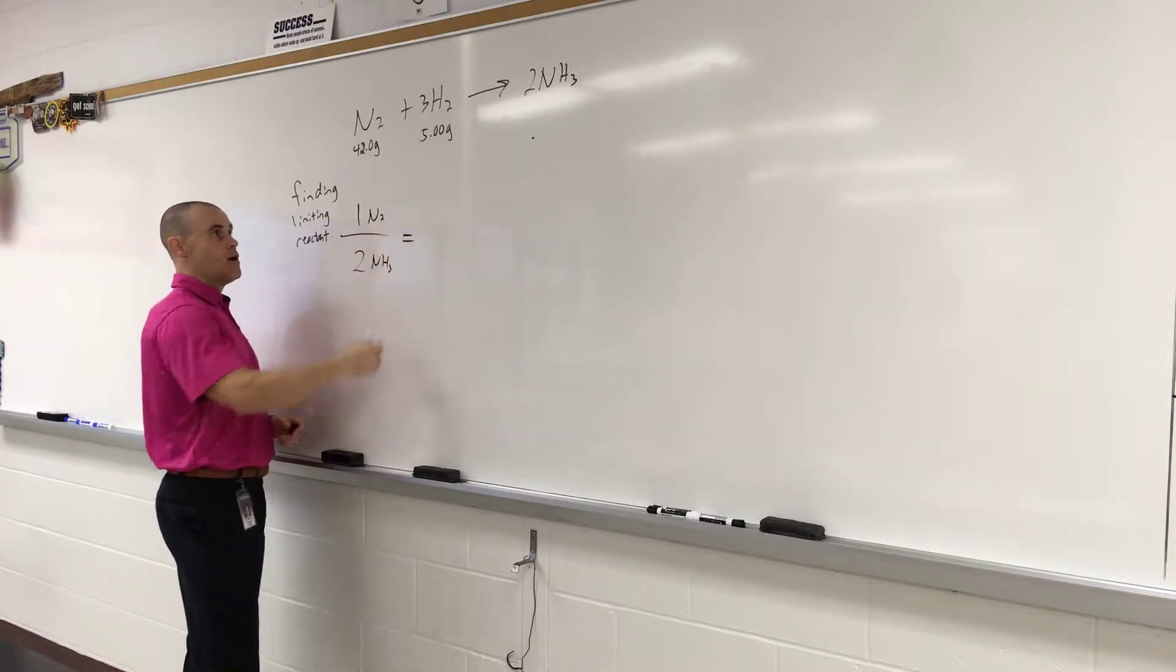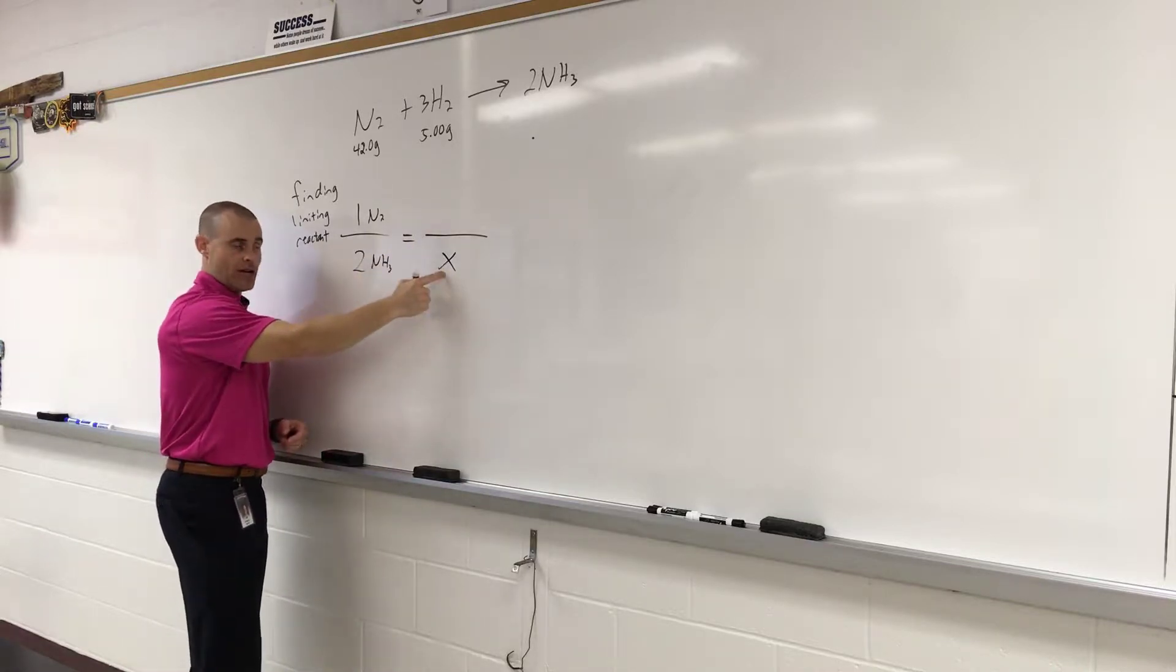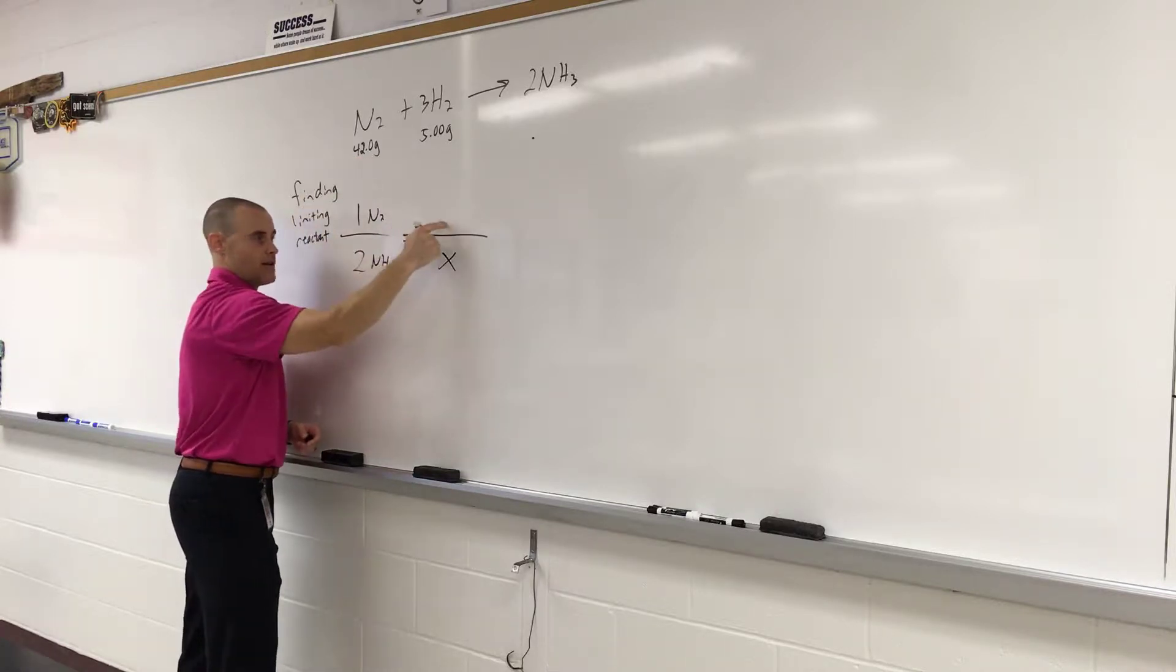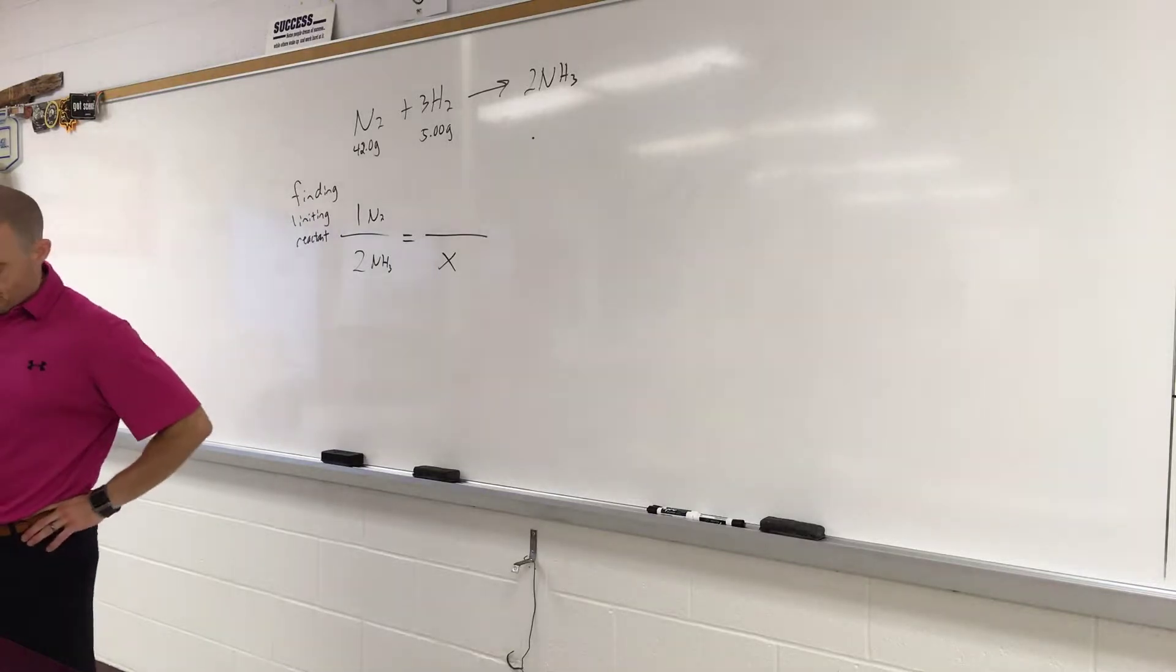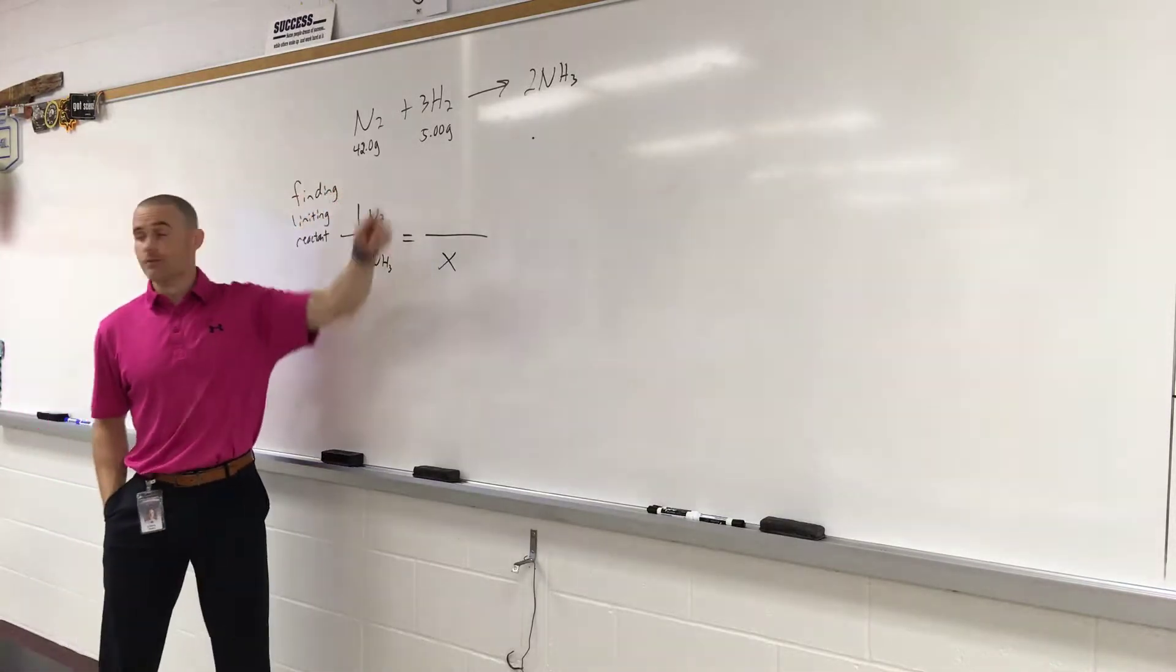So 1 to 2. Now we need to convert this to moles. We need to convert this to moles. Our X here means how many moles of NH3 will that many grams produce. So we first need to convert this to moles. So why don't you guys do that quick. And we've got to plug that in here. So go ahead and calculate how many moles 42 grams of N2 is. While you're at it, find your moles of hydrogen too. We're going to do that next.